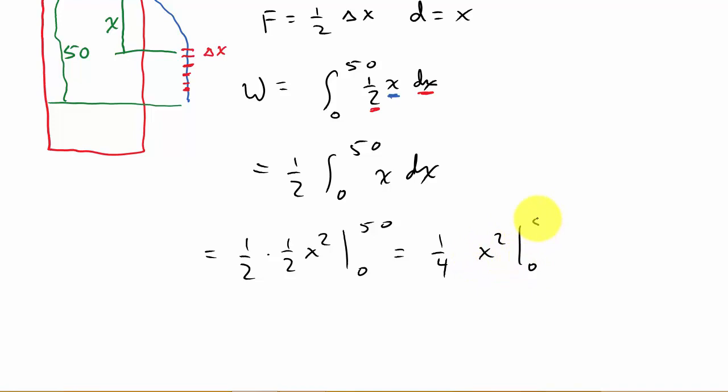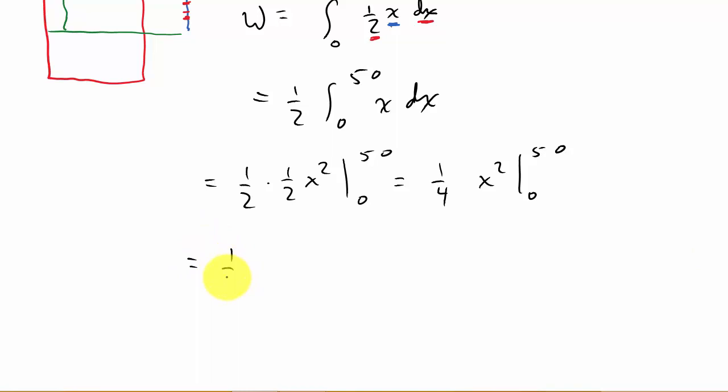And so, I'm going to get one fourth times, and then I plug the 50 and zero in, 50 squared minus zero squared. Punch that in my calculator. I get 625 foot pounds.